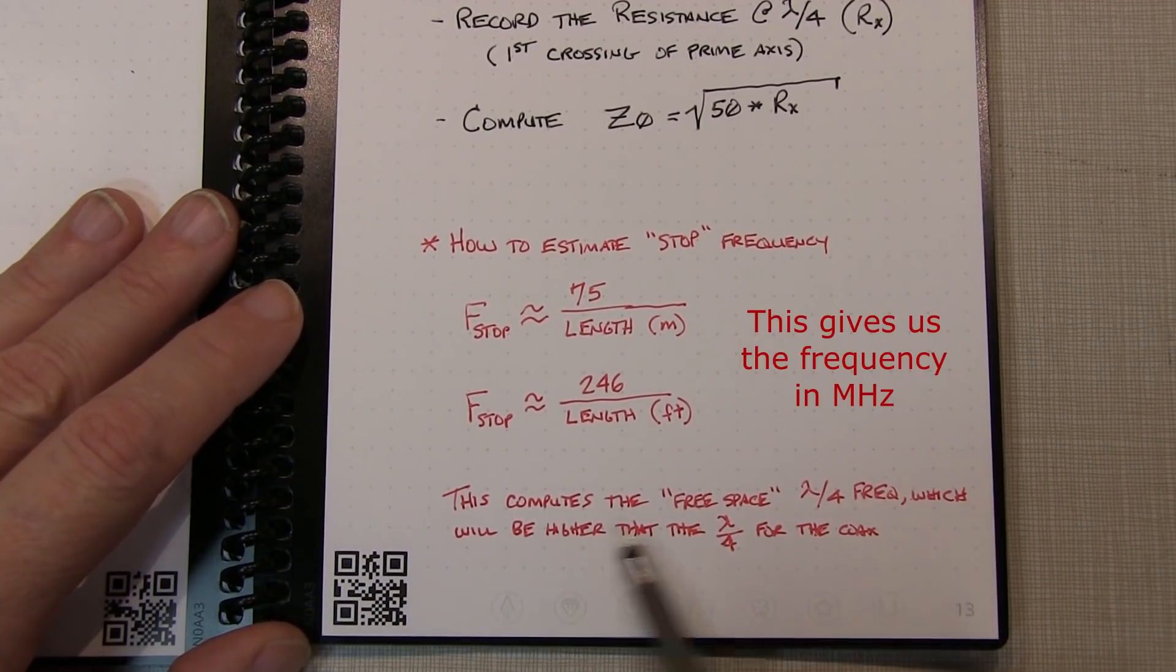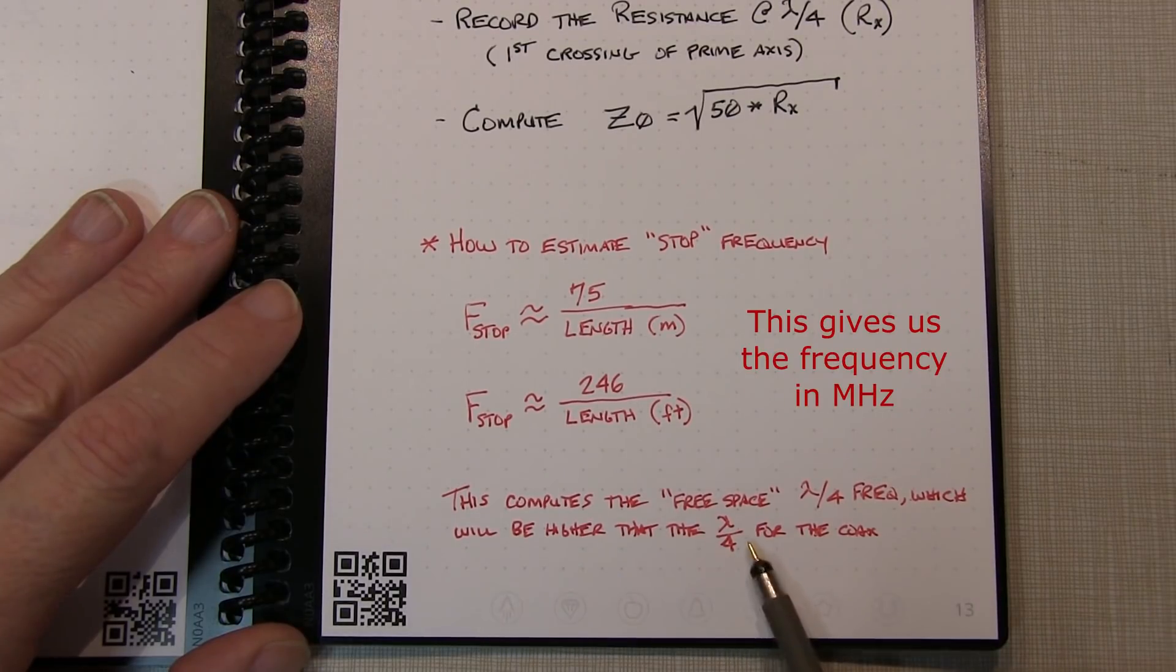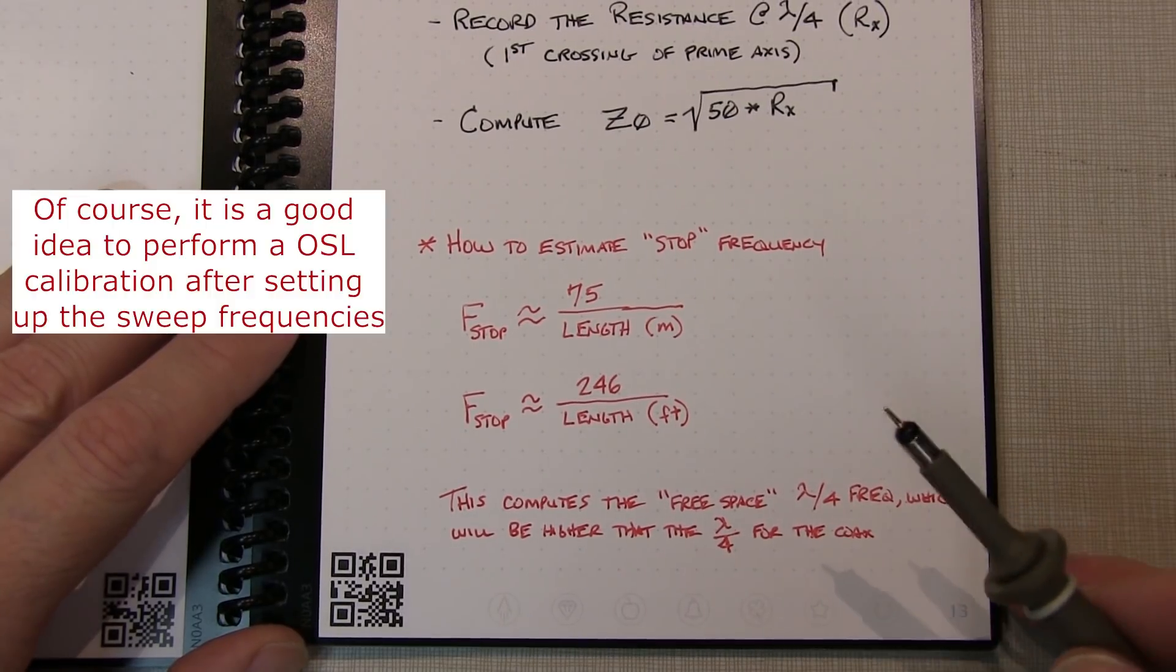This actually gives us the free space quarter-wavelength frequency, and that's guaranteed to be higher than the quarter-wavelength frequency for the line.